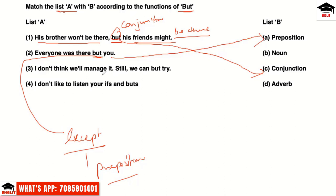Third example: 'I don't think we'll manage it, still we can but try.' Here 'but' is modifying 'can try' — that is, it modifies a verb. Any word that modifies or tells something more about the verb is an adverb. So here 'but' functions as an adverb.